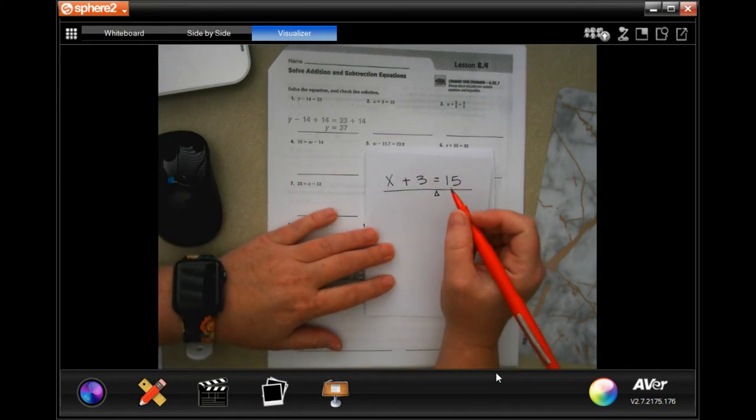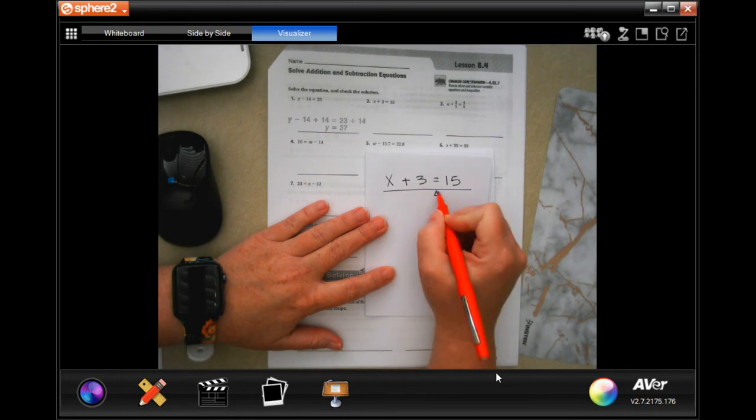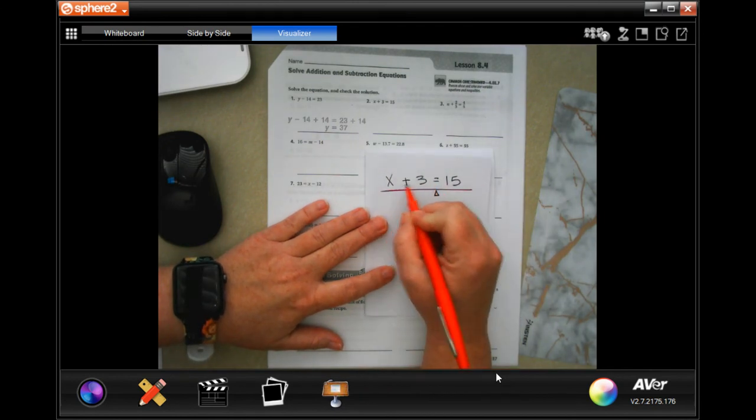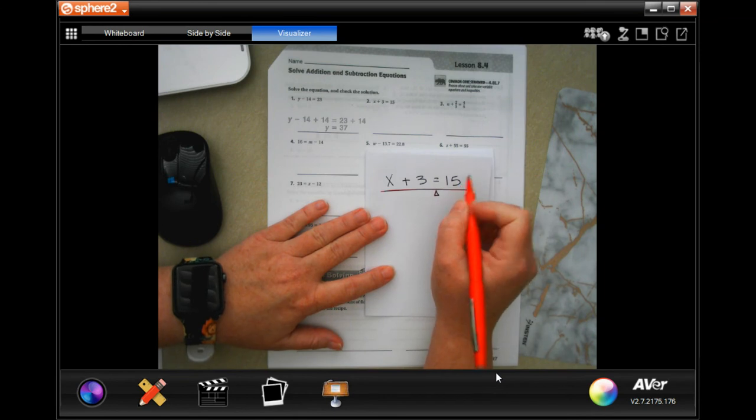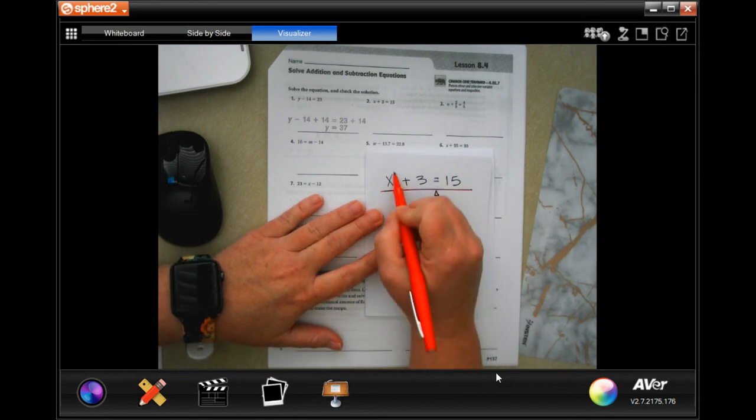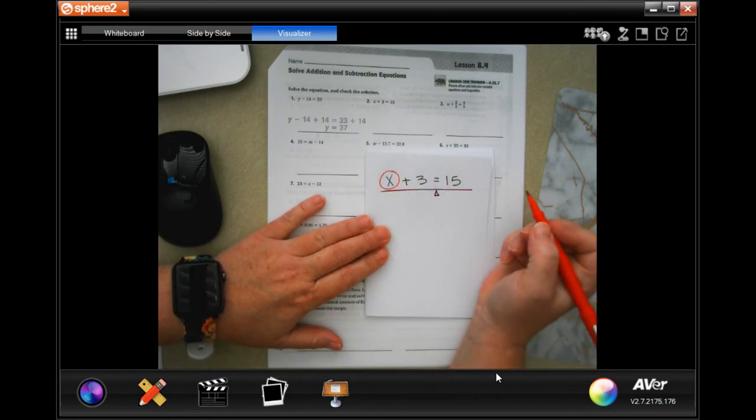Just like before, I want you guys to think of this as a kind of teeter-totter. Whatever you do to this side of the equal sign, you have to do the same thing to this side. You will notice I need to get x alone.